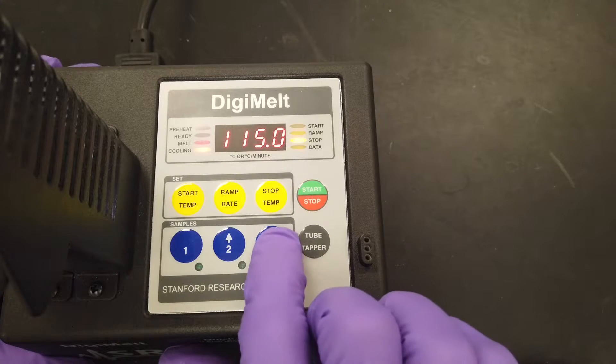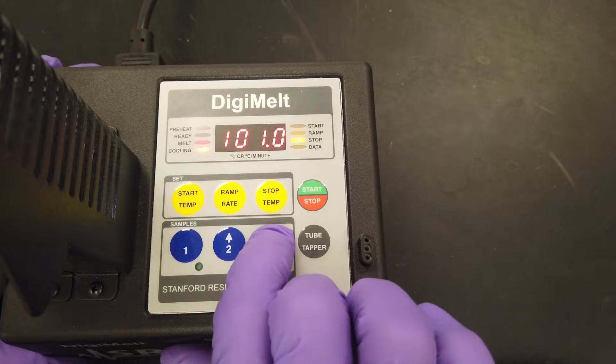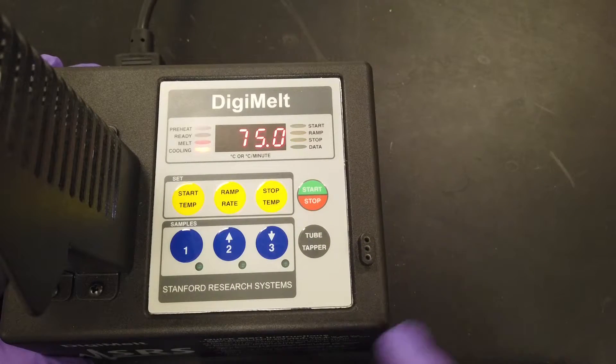Finally, select the stopping temperature by pressing the stop temp button followed by the up or down arrows until you have reached the max temp you expect to need. Press the start stop button to confirm.